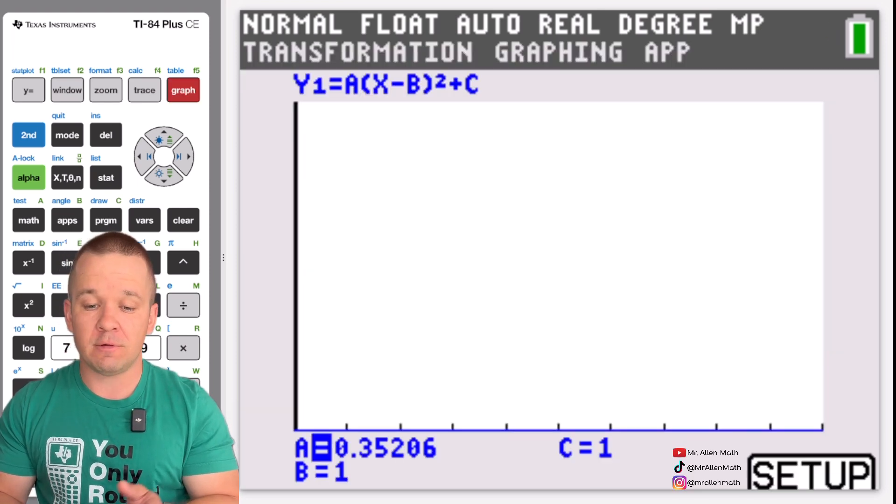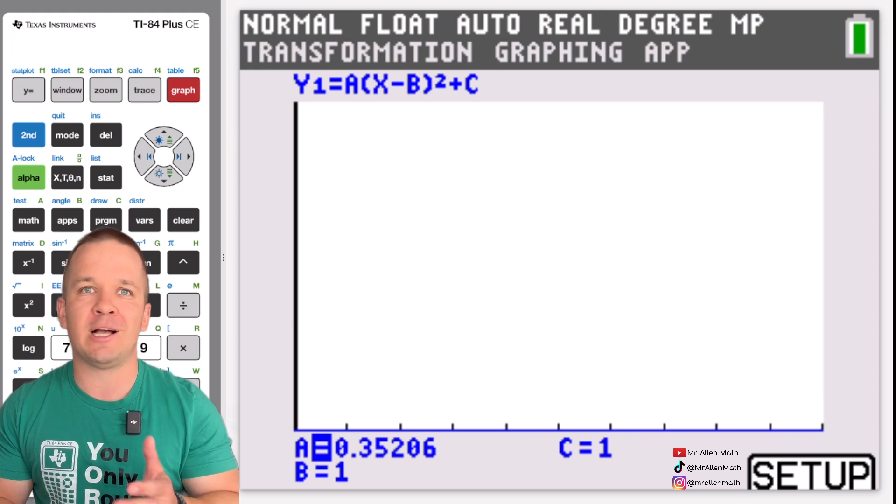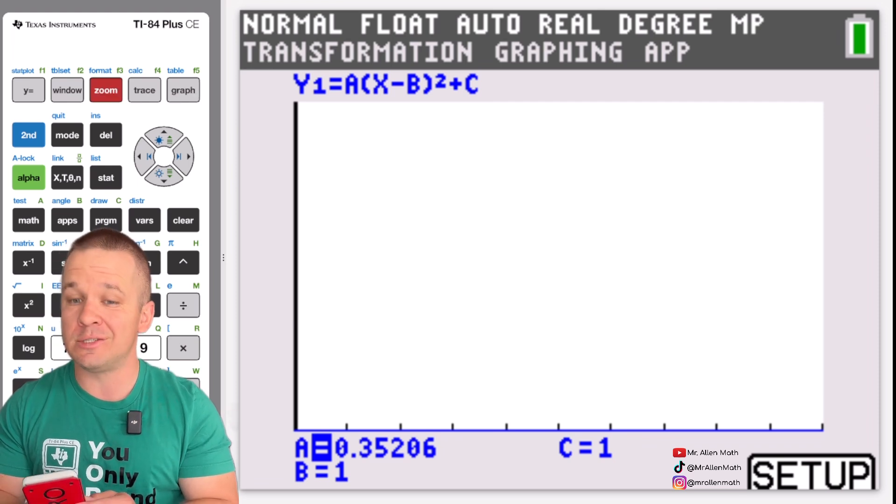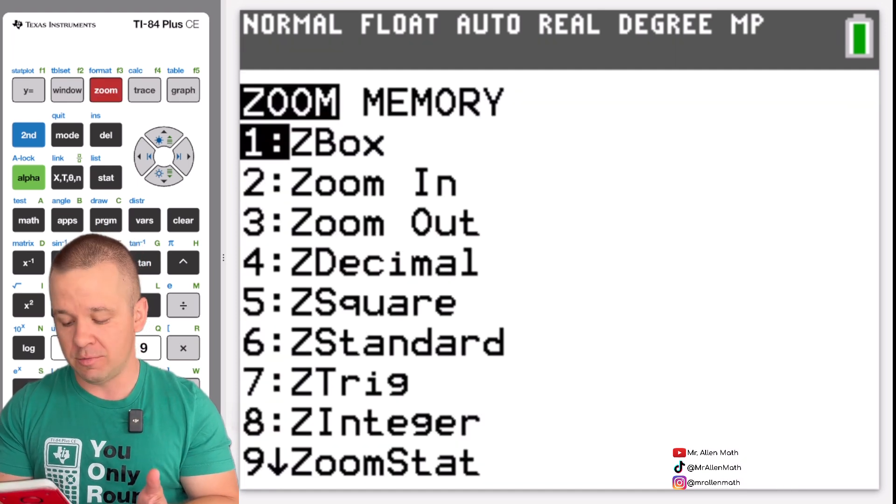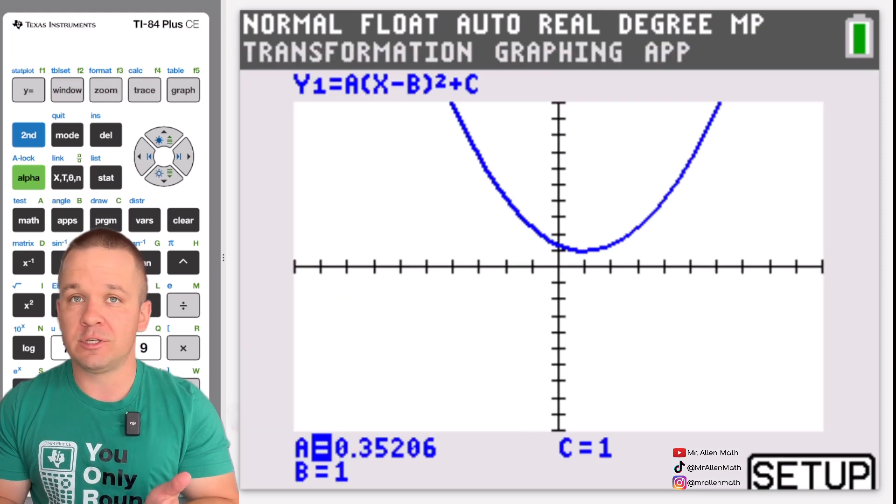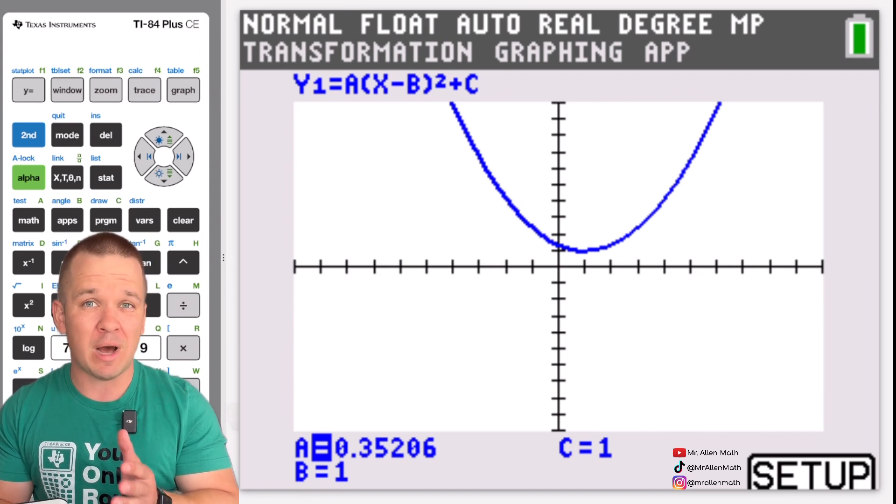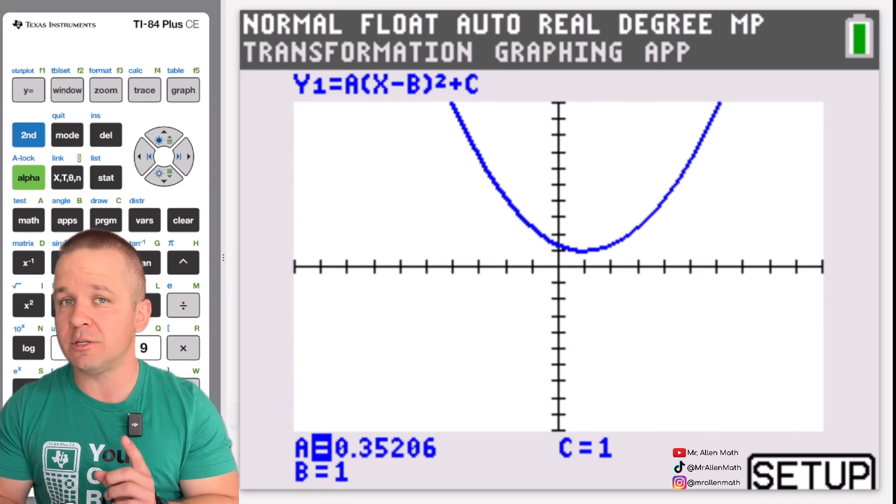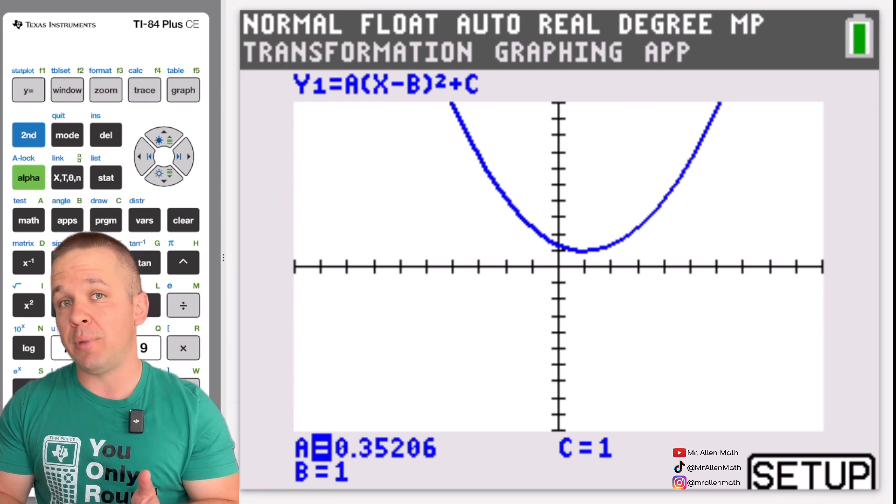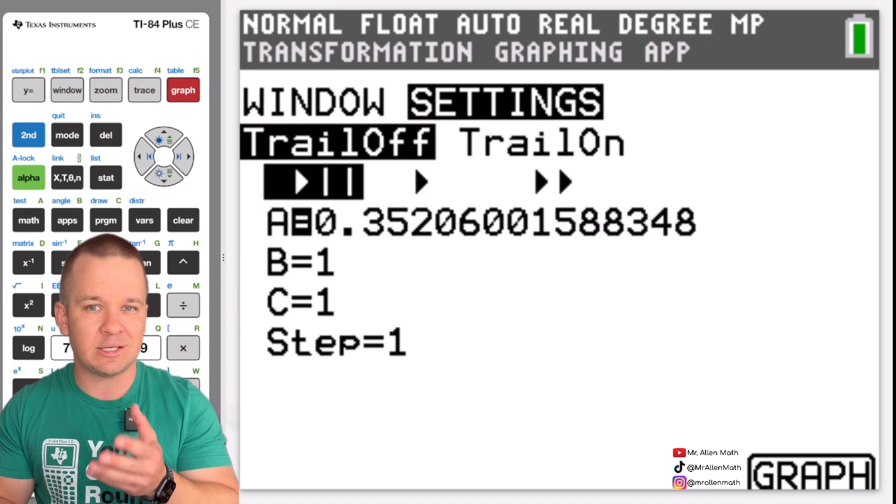So if I hit graph I've got an interesting window. Right. So a lot of your students are probably going to have a different window depending on what they were doing last or they borrowed a calculator. So I'm just going to hit zoom and I'm going to do standard number six. Now there's other ones you can do here but I like zoom six and there we go. So we've got our quadratic here but all these numbers are a little bit different. Everybody's might be a little different in your class. So what I'm going to suggest is that you hit the setup button. You're going to do so by hitting graph right now and it brings you into the setup menu.